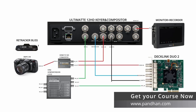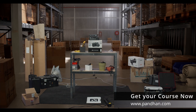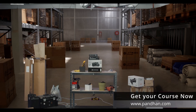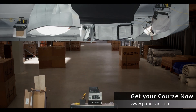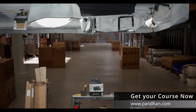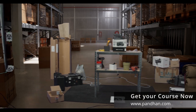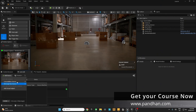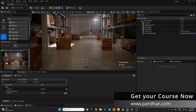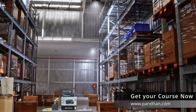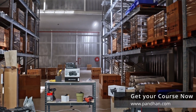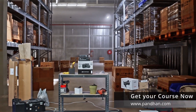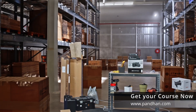This setup is perfect for static shots, but if you move the camera, everything gets messy — our background and garbage matte are not moving accordingly. To move them accordingly, we have to use a camera tracker. Let's connect the tracker to Unreal Engine using the Live Link plugin. Now you have the powerful and most affordable virtual production system to take your filmmaking to the next level.